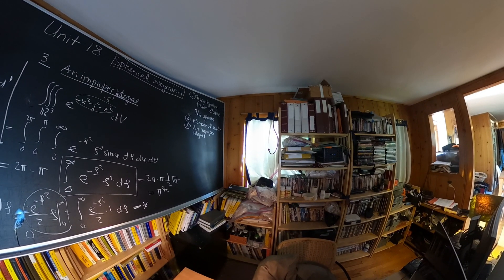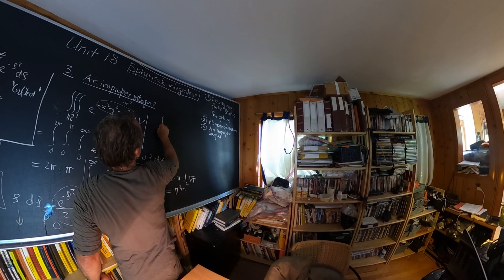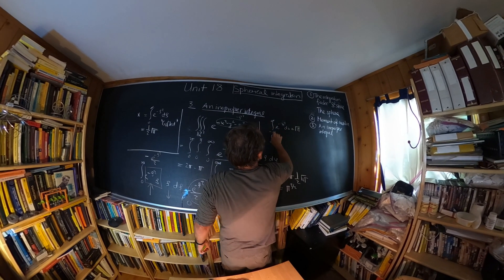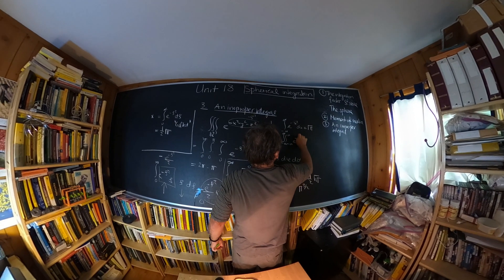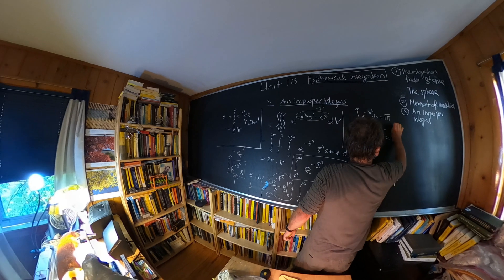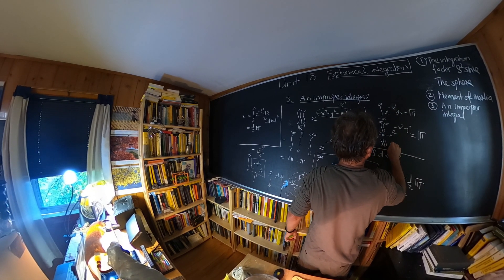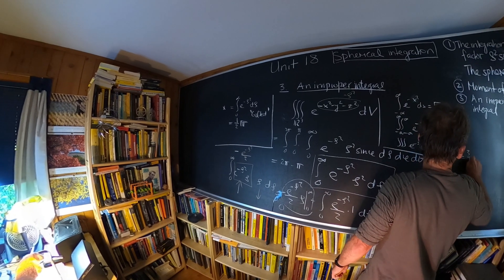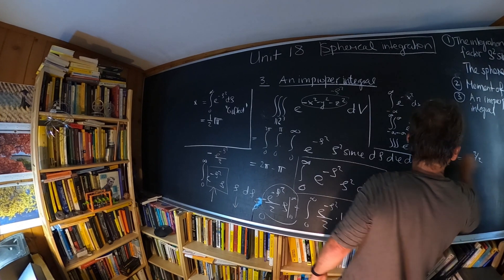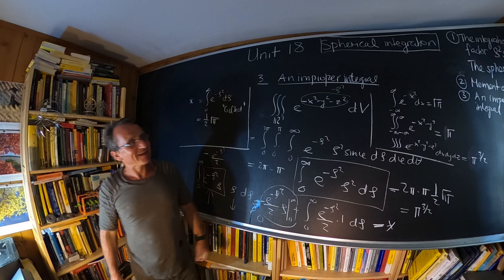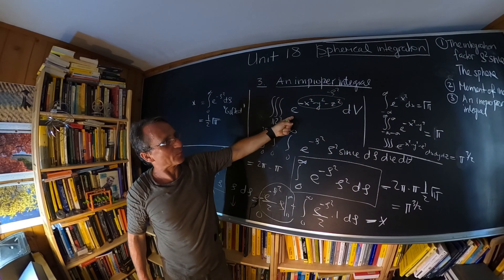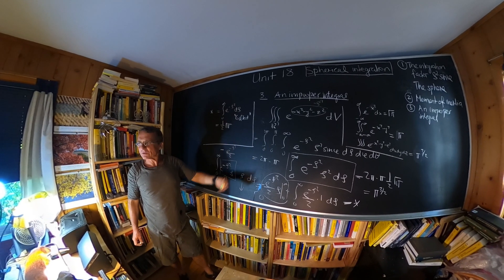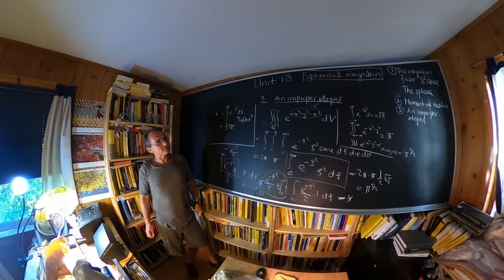So ∫_{-∞}^{∞} e^(−x²) dx = √π; in 2D, ∫∫ e^(−x²−y²) dx dy = π; and in 3D, ∫∫∫ e^(−x²−y²−z²) dx dy dz = π^(3/2). In every dimension, we just multiply by an extra √π. This is of course clear because the 3D integral is a product of three 1D integrals. We did a little extra work computing it in spherical coordinates, but it's so much fun!